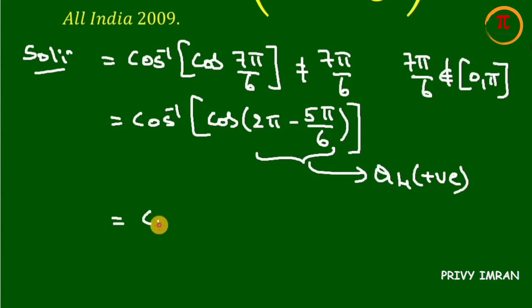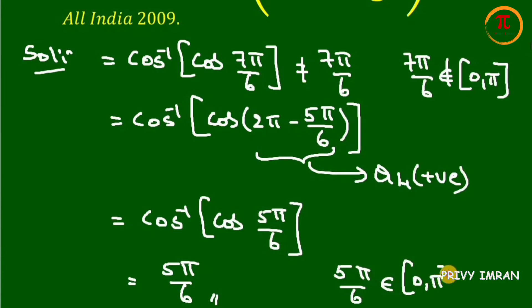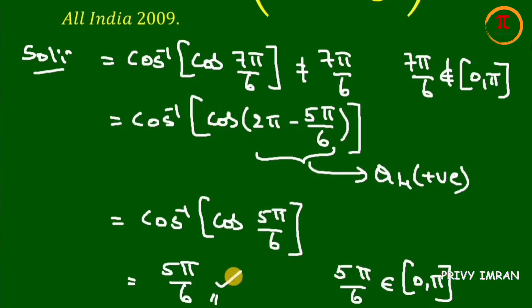Then it can be written as cos inverse of cos 5 pi divided by 6. Then my next step is 5 pi divided by 6, where 5 pi divided by 6 lies in between 0 and pi. Hence my answer 5 pi divided by 6 is the correct answer.